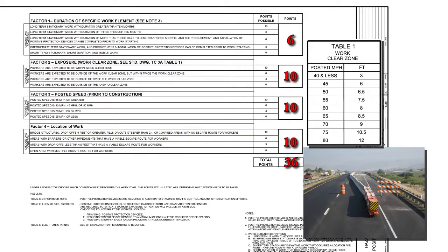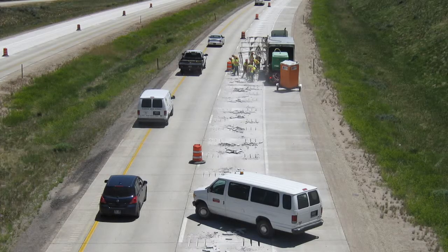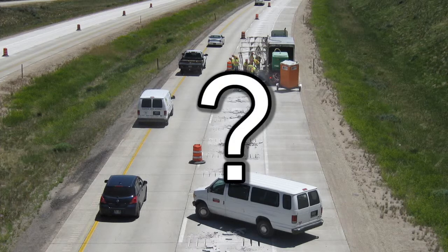Let's look at the results. Positive protection devices are required in addition to standard traffic control and any other mitigation efforts. In this case, concrete barrier is required. Now that you are familiar with Standard Drawing TC3B, let's review this photograph of a dowel bar retrofit operation. Knowing that the accumulated points would fall within the 20-to-30 point range, what changes would be required to create a safe work zone?